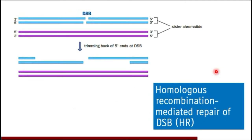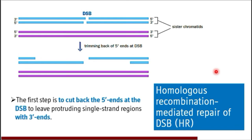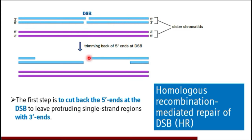Homologous recombination operates after DNA replication and before mitosis actually starts — so immediately after DNA replication, the HR process will begin. The first step is to identify the double strand breaks and the sister chromatid. The next step is to cut back the 5' ends at the DSB. The 5' end of the double strand break is cut back, and similarly for the other strand — the repair process occurs from the 5' end to the 3' end.